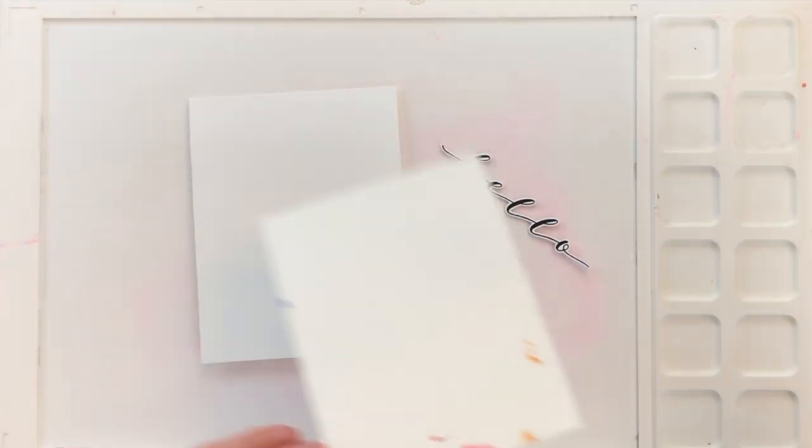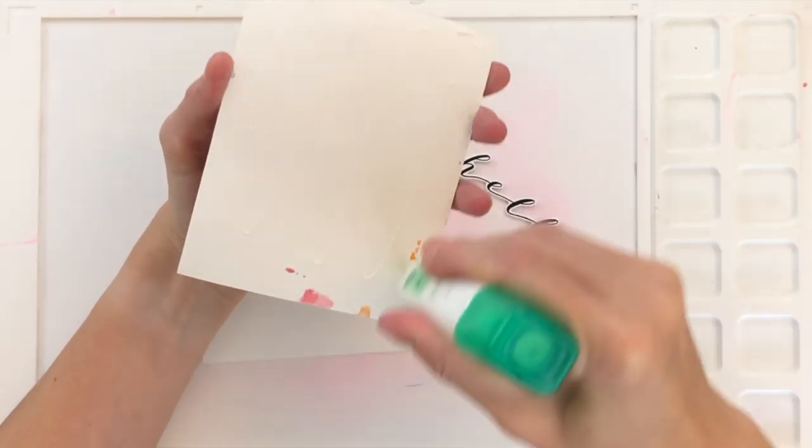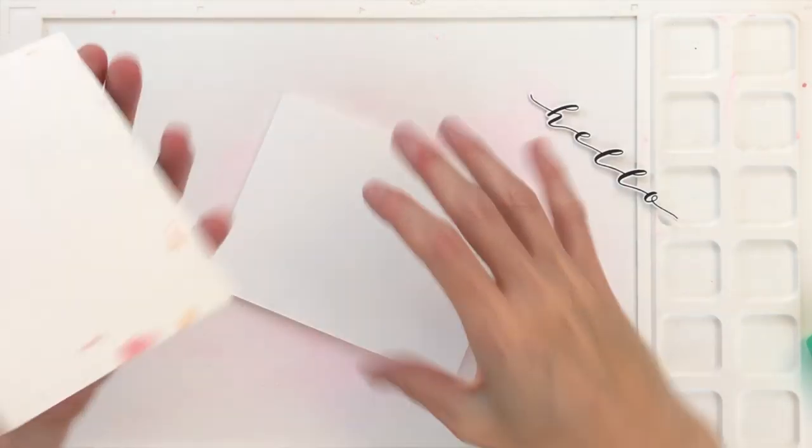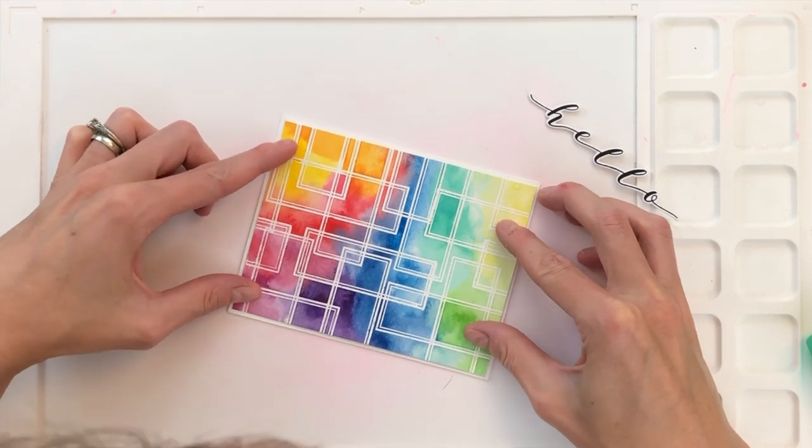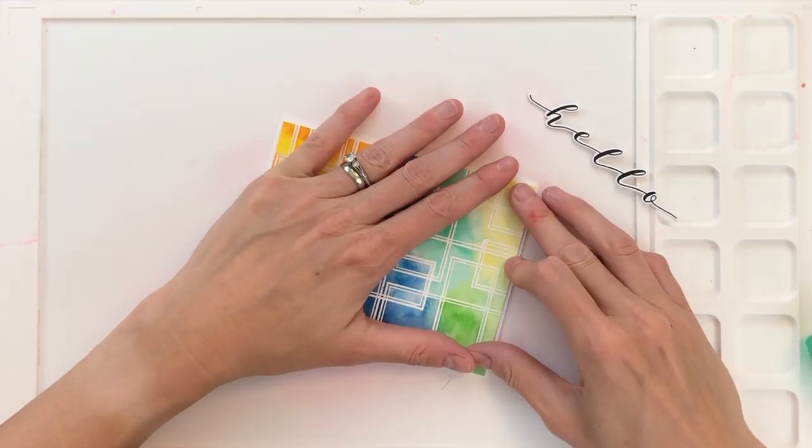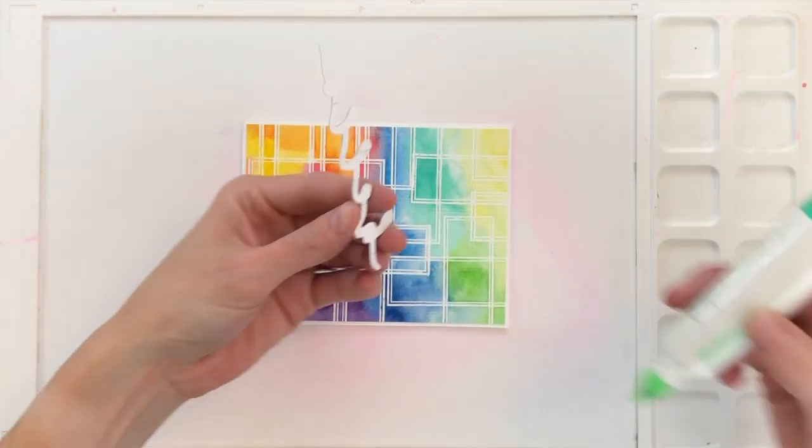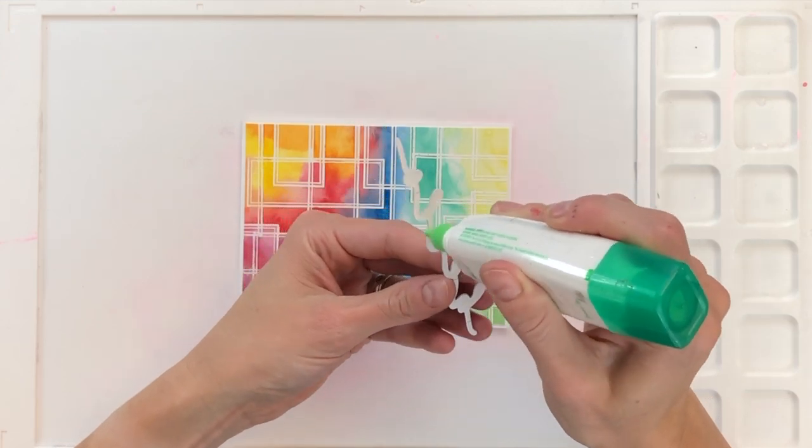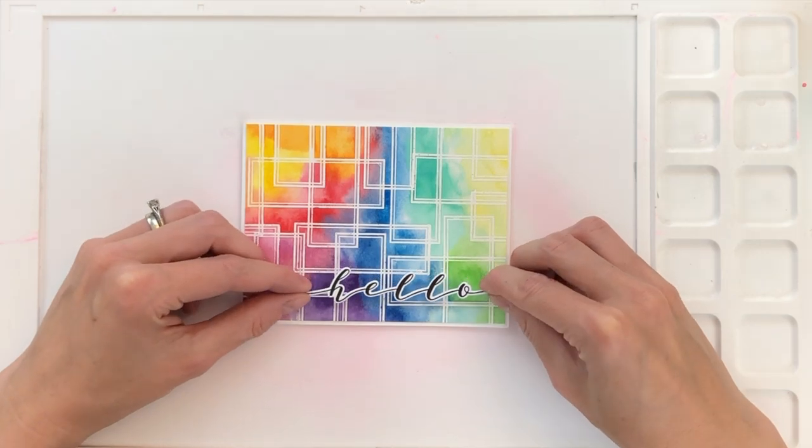My watercolor panel is completely dry. I trimmed down an eighth of an inch on all sides so when I adhere this onto my A2 top folding white card base, I'll have a nice white border. I used Tombow Mono Multi Liquid adhesive to glue the panel down, and now I'll add glue to the back of my dimensional hello and pop this onto the card front.